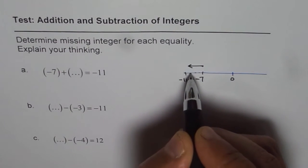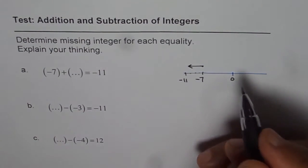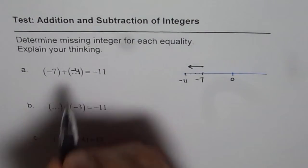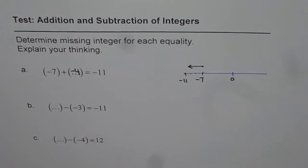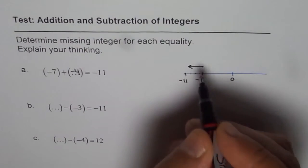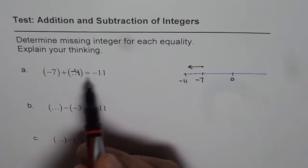So from 7, 8, 9, 10, 11 is 4, right? So it should be minus 4. So that is how you can get your answer. You can say, from minus 7, it is kind of going leftwards, right? It is more negative.